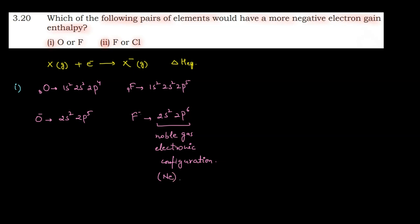Because F⁻ has attained the noble gas electronic configuration, there is greater stability and more energy is released in the process. Therefore, the electron gain enthalpy of fluorine is more negative. So, in the pair of oxygen and fluorine, fluorine has the more negative electron gain enthalpy.